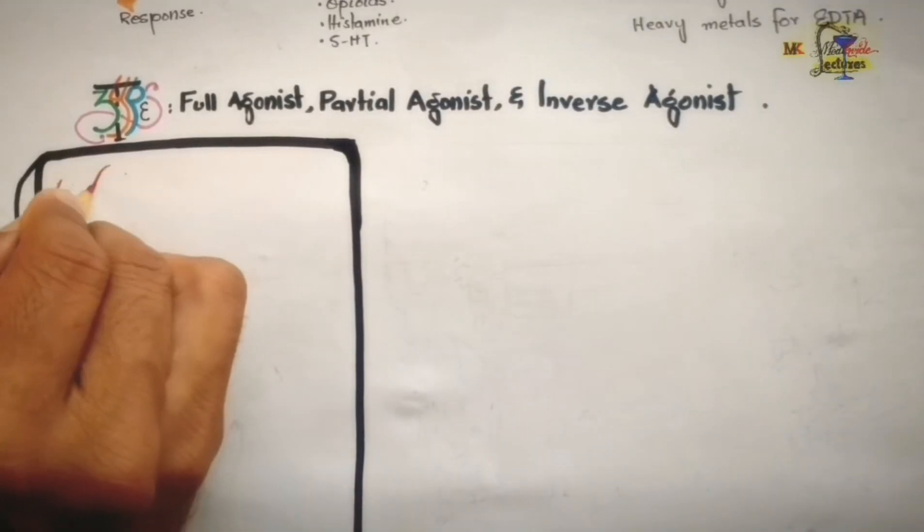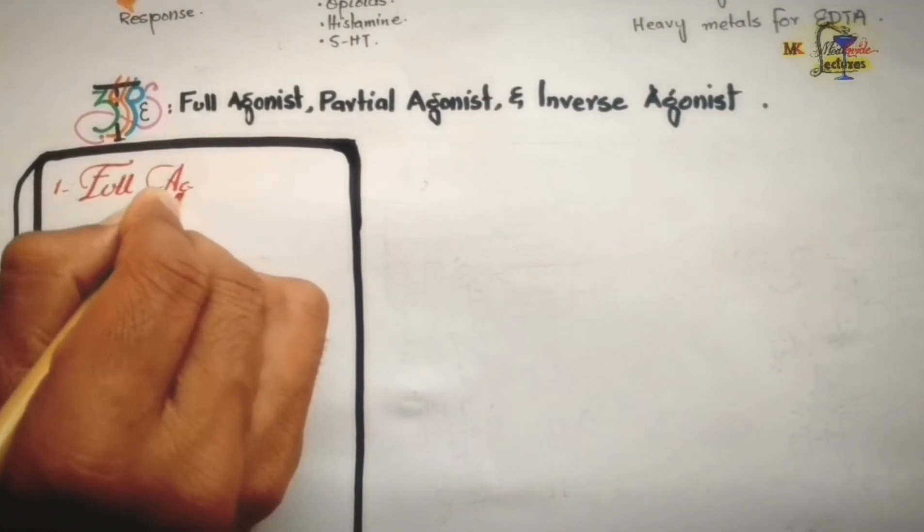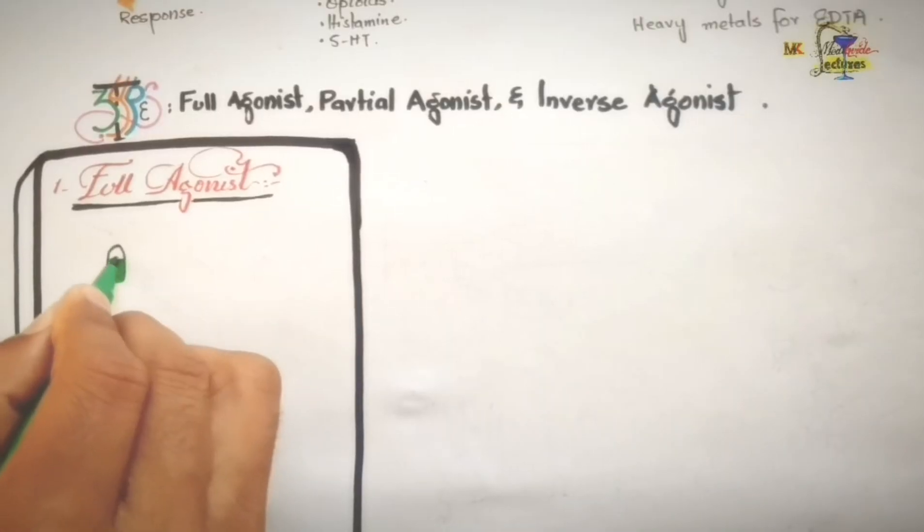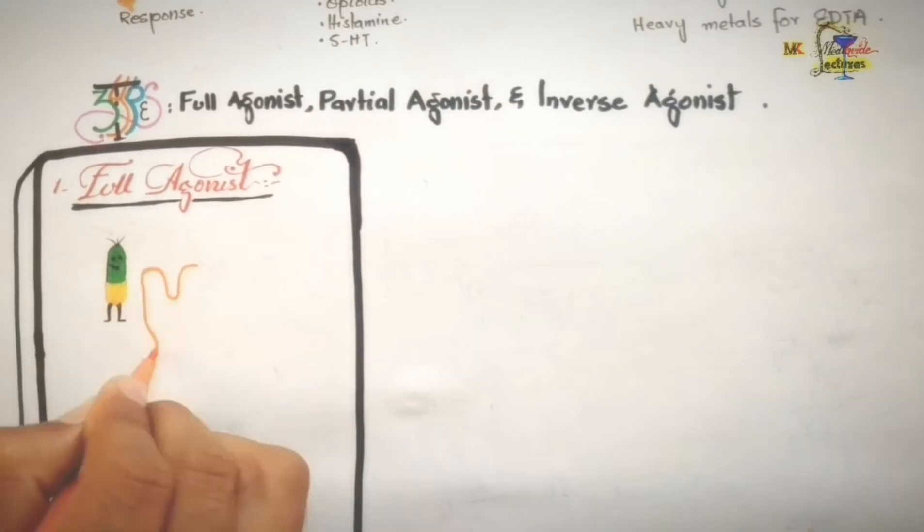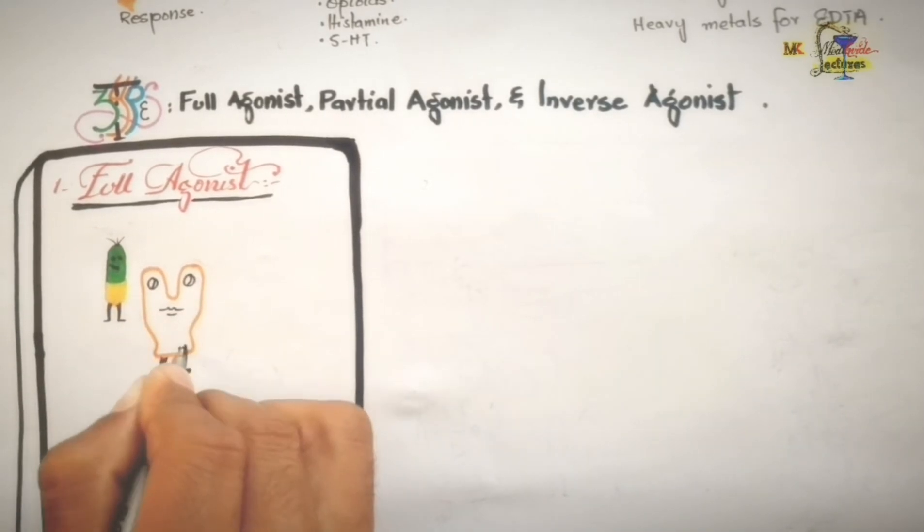So, first of these, what is full agonist? Well, it is defined as the drugs which have affinity and maximal intrinsic activity. It is called full agonist.